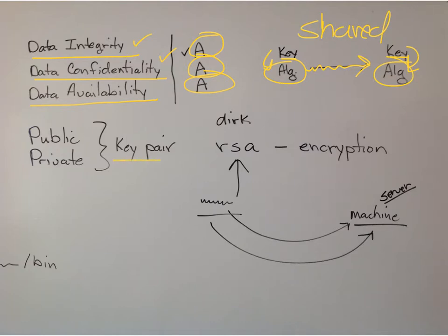Another way to manage that, which is popular nowadays, is to use a public and private key. A public key you can share; the private key you would always keep — never let anybody have it. If you use a public key to encrypt, you've got to have the private key to decrypt it. If you use a private key to encrypt, you've got to have the public key to decrypt it. It's called a key pair.